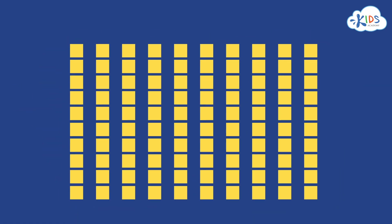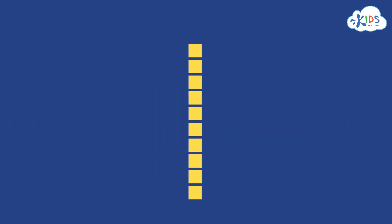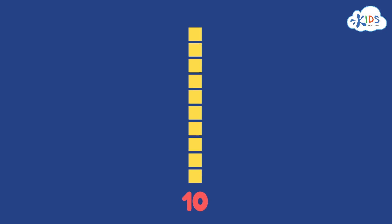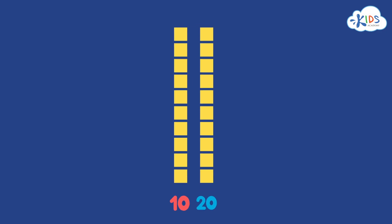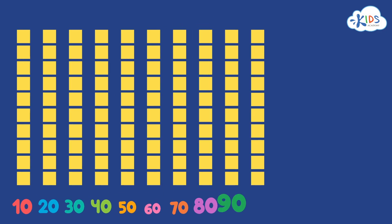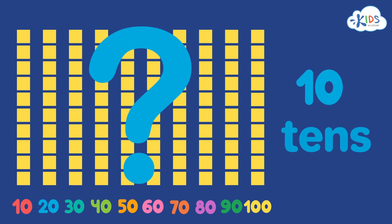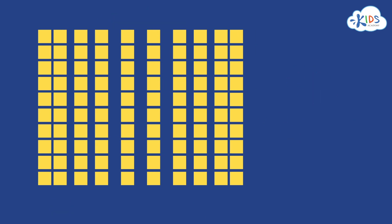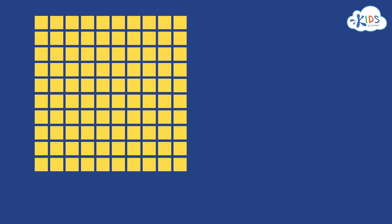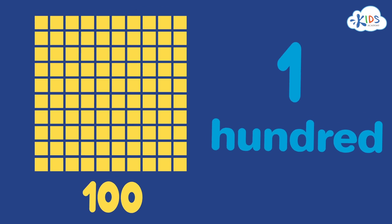Let's check out the base ten blocks to make sure it's true. We can see that one long has ten cubes in it. So if we have two longs, that's twenty cubes. What if we had ten tens, or ten longs? Well, that would give us one hundred, just like we counted.